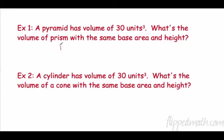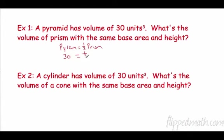A pyramid is one-third the volume of a prism. So if a pyramid has a volume of 30 units cubed, what is the volume of a prism with the same base area and height? All we have to do is multiply by the reciprocal 3, so a prism with the same base area and height would have a volume of 90 units cubed.